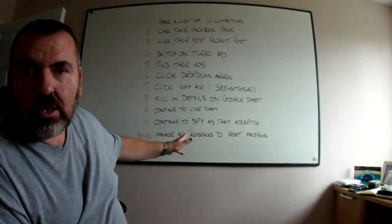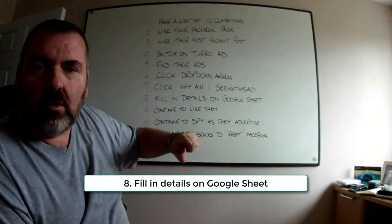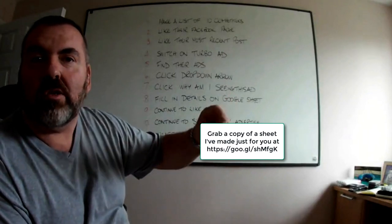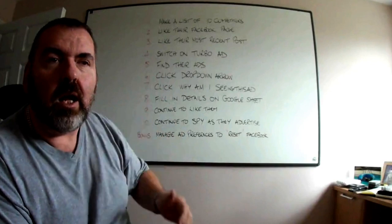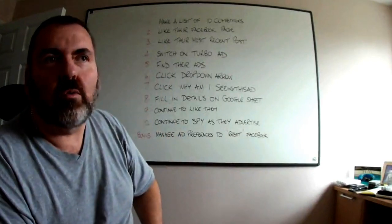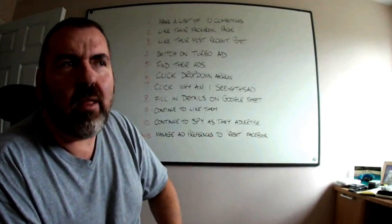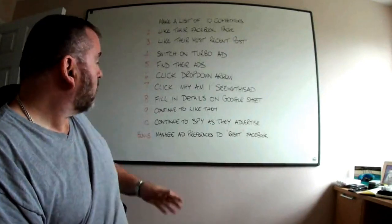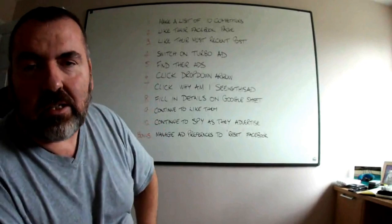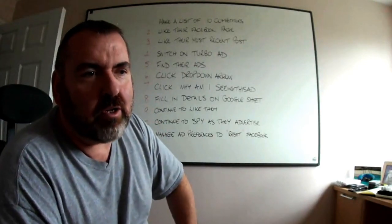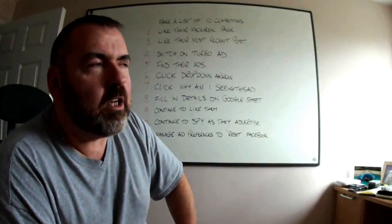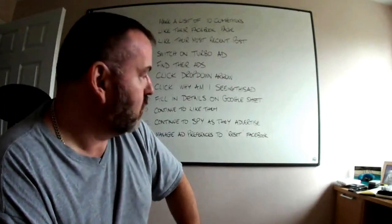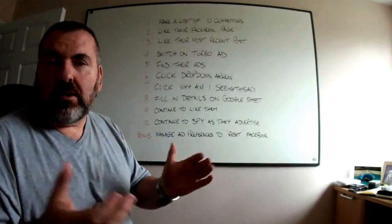Once you've done that, I would suggest you make a Google Sheet and write down who the competitor is, what day you saw the ad, the title, description, a link to the Snagit capture you've got, and the reason why you were seeing that ad. From there, you'll be able to build up a decent profile of which competitors you don't need to worry about and which ones you do. Once you've filled in the details, it's tempting to stop — but I would continue to like their page so that if they post ads in the future, you'll still get access to those and be able to continue spying on the advertiser.